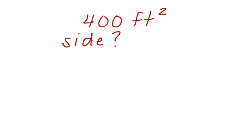What if the area of the square platform had been 400 feet squared? What would the side length be then? Well, we can set it up the same way. We can write area equals side squared.